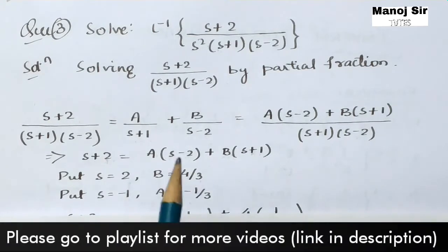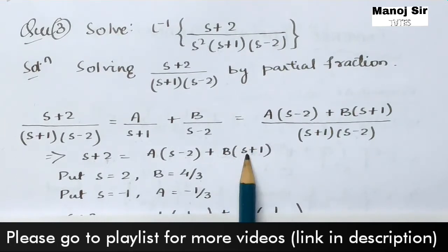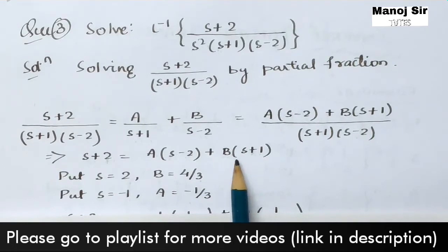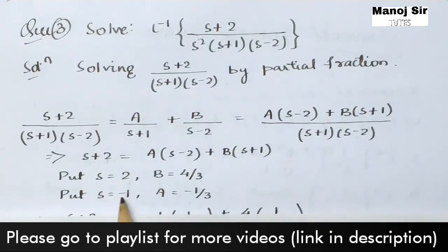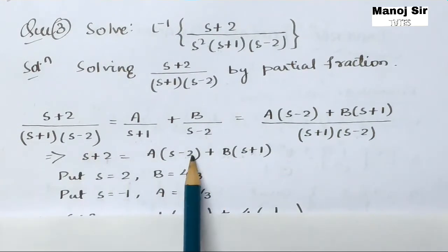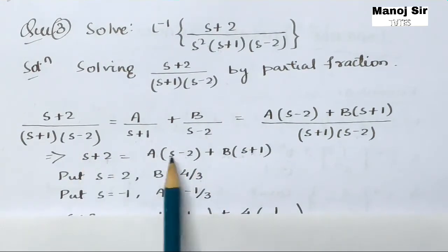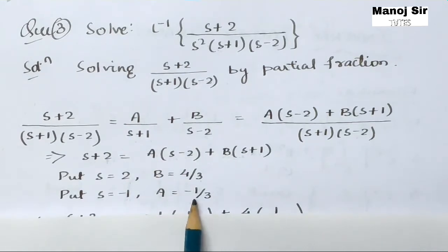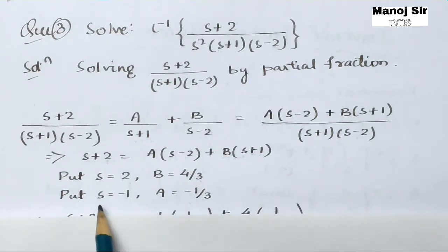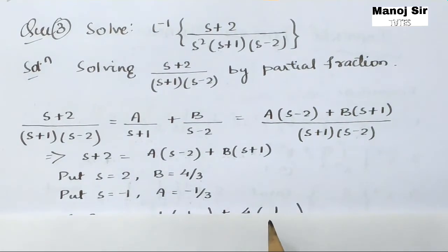To find A, we put s = -1 to cancel the B term. Substituting s = -1 gives A = -1/3. It's a simple calculation you can verify yourself.